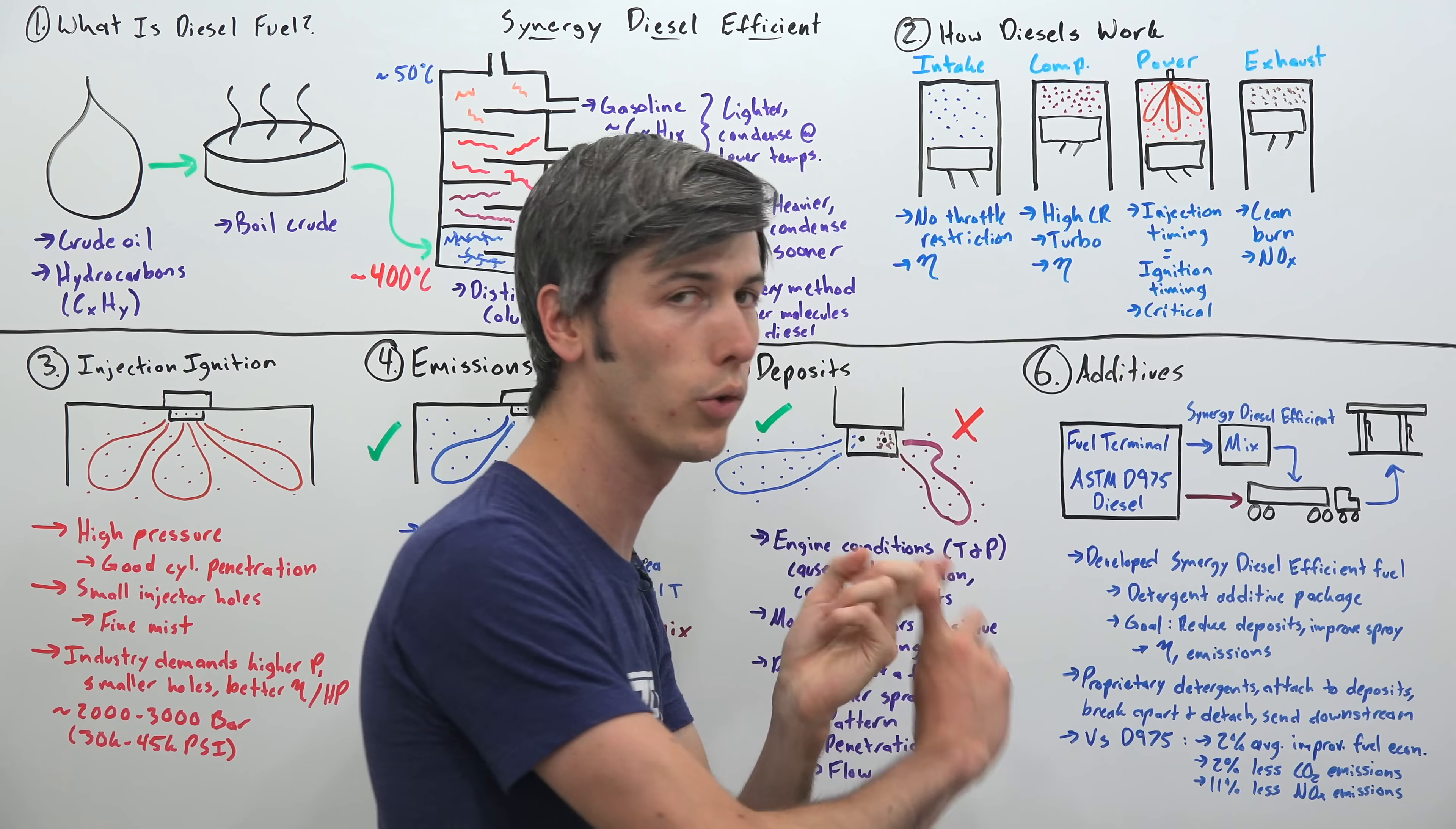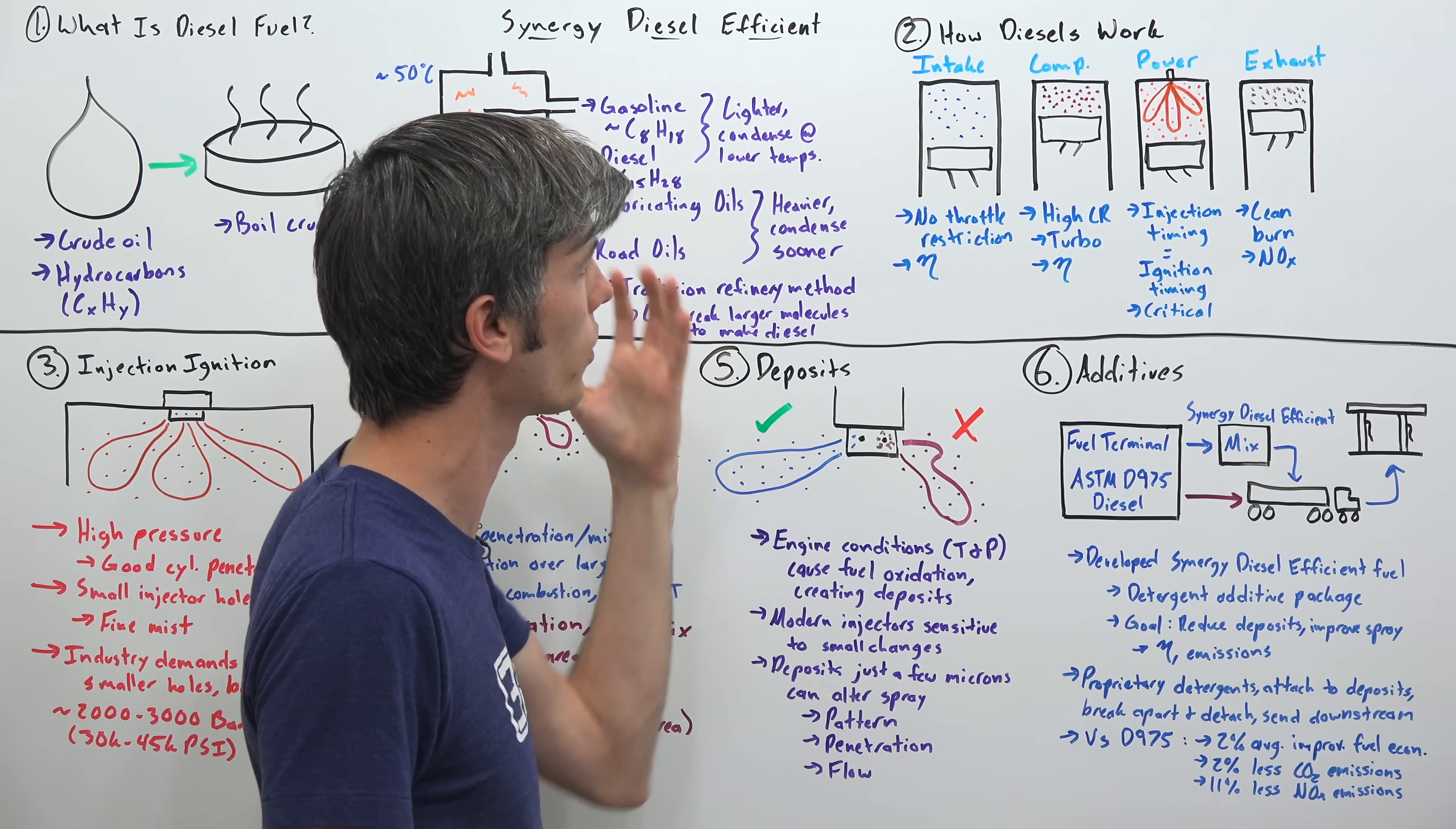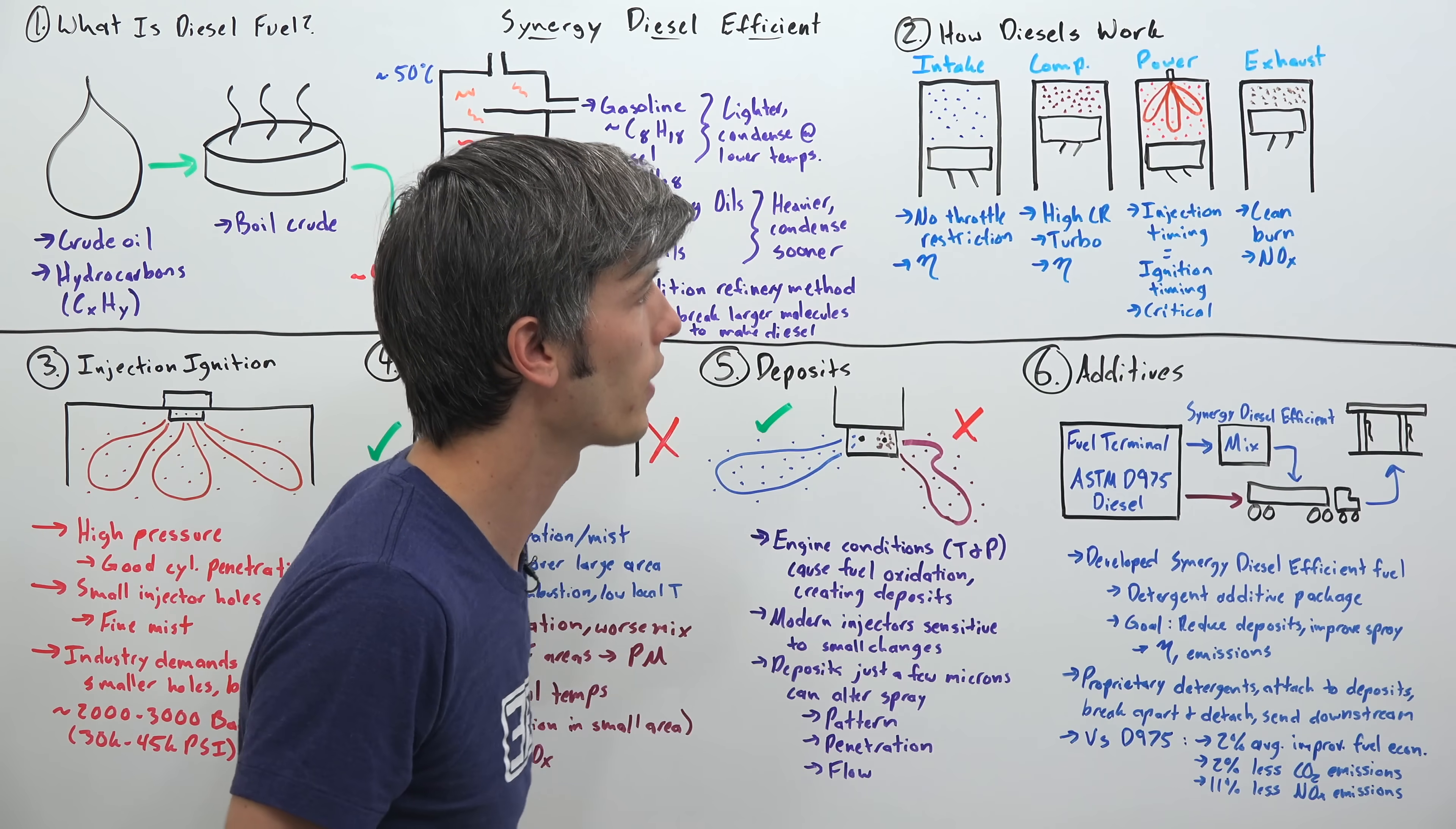For the compression stroke, you tend to use higher compression ratios, because you're not using spark ignition. You're now using fuel to ignite it after that compression stroke has occurred. They also tend to use turbochargers, and as a result they have more torque. And generally speaking, because of these higher compression ratios, they're going to be more efficient. So getting to our power stroke, instead of a spark igniting that air fuel mixture, ignition is timed based on when you inject that diesel fuel. So this is a very critical component of how this entire engine works.